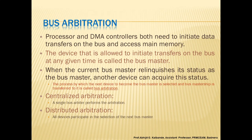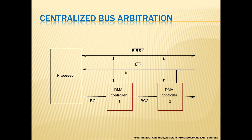We will now look at centralized bus arbitration. In the block diagram, you can observe one processor block to which two DMA controllers are connected in series — DMA controller one and DMA controller two. The bus arbitrator may be the processor or a separate unit connected to the bus, as shown in this diagram, where the processor contains the bus arbitration circuitry.